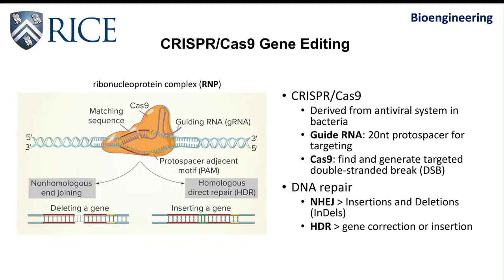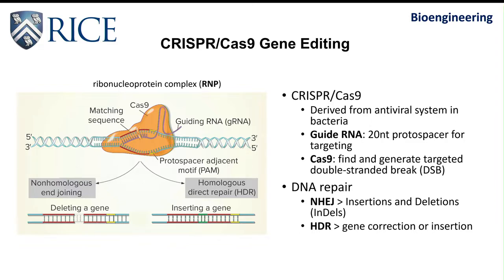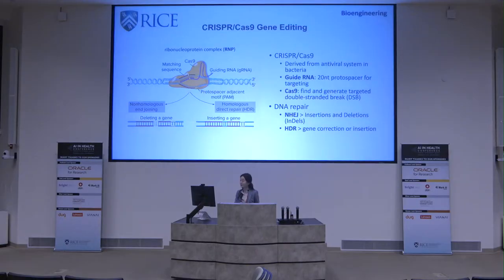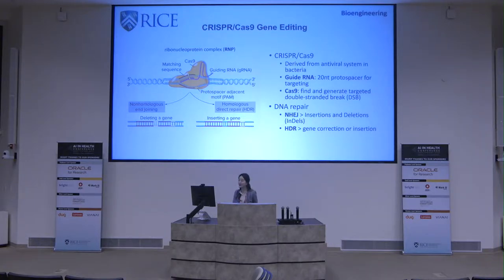Let me first introduce the CRISPR-Cas9 gene editing tool we are using for genome engineering. CRISPR-Cas9 is derived from the antiviral system in bacteria. It has two main components: guide RNA and Cas9 protein. They form a ribonucleoprotein complex called RNP. The guide RNA has 20 nucleotides — the protospacer sequence — used for targeting specific sequences in the genome. The Cas9 protein is the nuclease protein guided by the guide RNA to find the target sequence in the genome and generate targeted double-strand breaks.